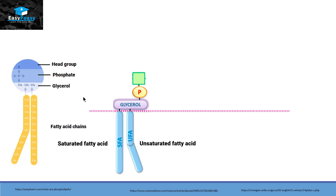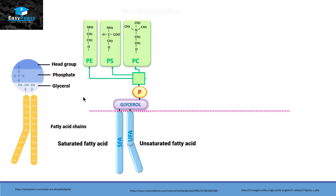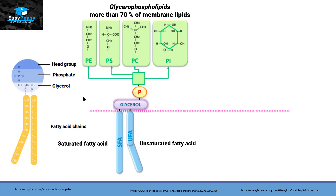The head group can be phosphatidyl ethanolamine, phosphatidyl serine, phosphatidyl choline, or phosphatidyl inositol. This compound is called glycerophospholipid and it makes up more than 70 percent of the lipid membrane.